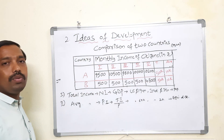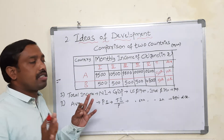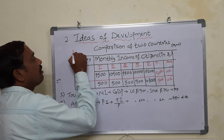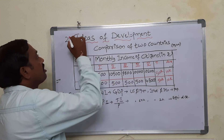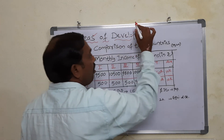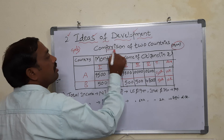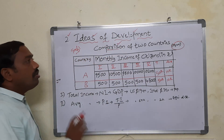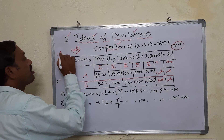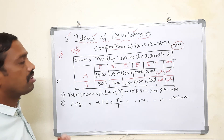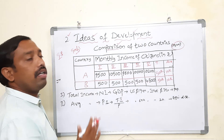Hello children, I hope you're all fine. Let us discuss the tables given in your textbook, especially in this video about chapter two: ideas of development. In this lesson, on page number 20, there is a table about comparison. These tables come under information skills, which is the third economic standard, and it carries six marks in your final examination.